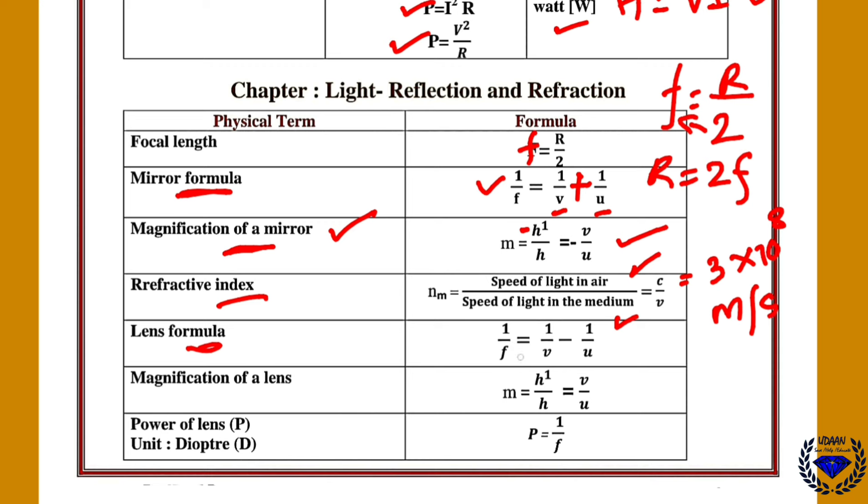Lens formula is, 1 upon f is equal to, in mirror you are having plus sign, and in lens you are having minus. So 1 upon f is equal to 1 upon v minus 1 upon u.